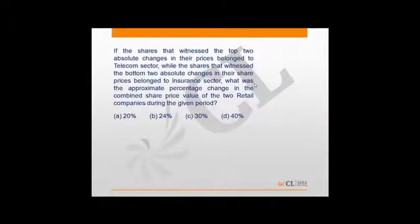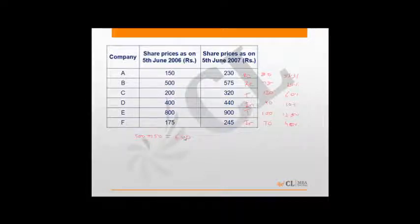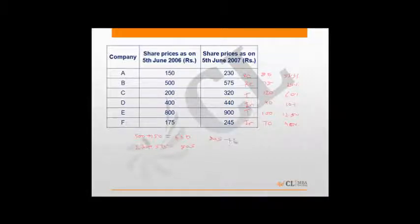The question asks: what was the approximate percentage change in the combined share price value of the two retail companies during the given period? The combined share price as on 5th June 2006 was 500 plus 150, which equals 650. The combined share price as on 5th June 2007 was 230 plus 575, which equals 805. So the answer is (805 − 650) / 650 × 100 = 155/650 × 100.